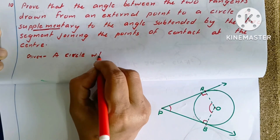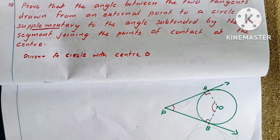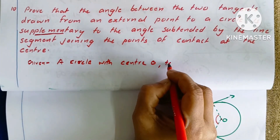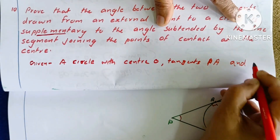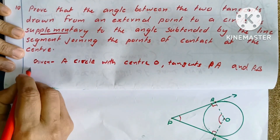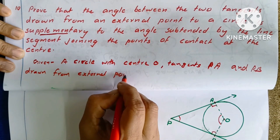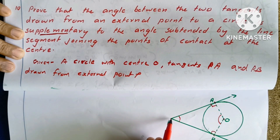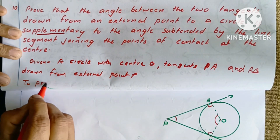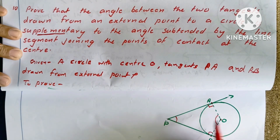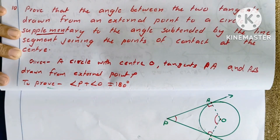Given: Circle with centre O and tangents PA and PB drawn from external point P. To prove: Angle P plus angle O equals 180 degrees — that is, they are supplementary.